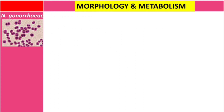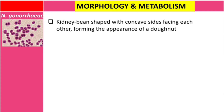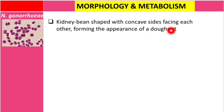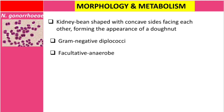Let's talk about the morphology and metabolism of this bacteria. Neisseria gonorrhoeae, and also Neisseria meningitidis, are bean-shaped or kidney-shaped diplococci with concave sides facing each other, forming the appearance of a donut. In exams they may say bean-shaped, kidney-shaped, or donut-shaped. It is a Gram-negative diplococcus, facultative anaerobic, and thrives well in a high carbon dioxide environment.